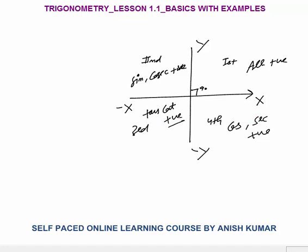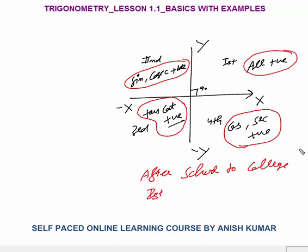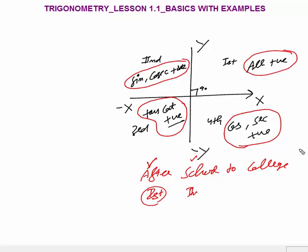All others are negative. So: if the angle lies in the fourth quadrant, between 270 and 360, cos and sec are positive. If the angle lies between 180 and 270, tan and cot are positive. If the angle lies between 90 and 180, sine and cosec are positive. And in the first quadrant, all are positive. An easy way to remember this is 'After School To College': A means All are positive in the first quadrant; S means Sine is positive in the second quadrant; T means Tan is positive in the third quadrant; C means Cos and secant are positive in the fourth quadrant.